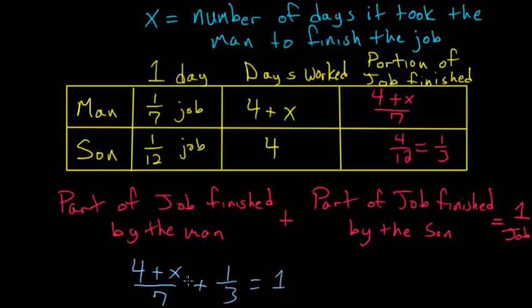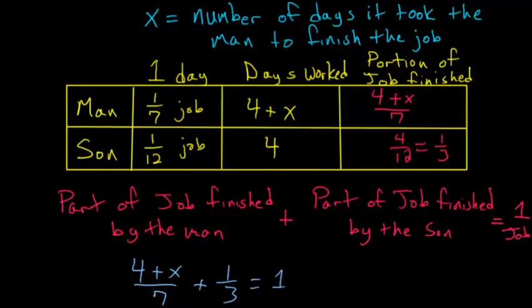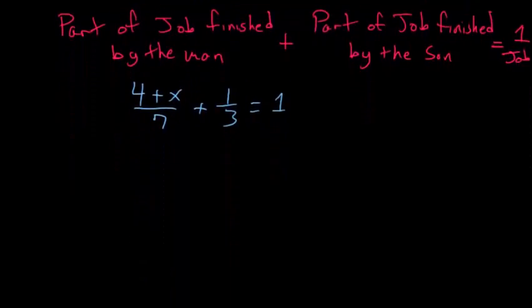Now that we have our equation, it only has the variable x, which we can solve for. So let's do that. And we can multiply each side of this equation by the common denominator of these fractions, which would be seven times three, or 21.